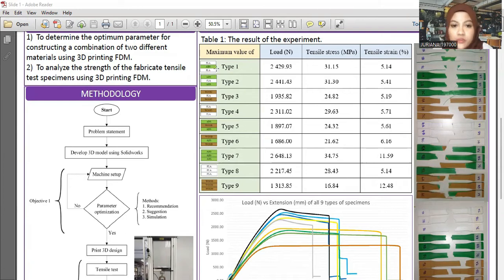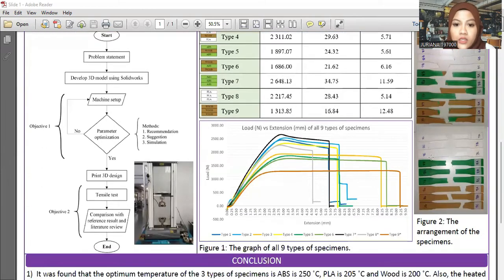From the results, you can see that overall from Type 1 to Type 9, the highest tensile stress is Type 7 at 34.75 MPa. But if we only analyze Type 1 through Type 6, the highest tensile stress is 31.30 MPa for Type 2, and the lowest is 21.62 MPa for Type 6.